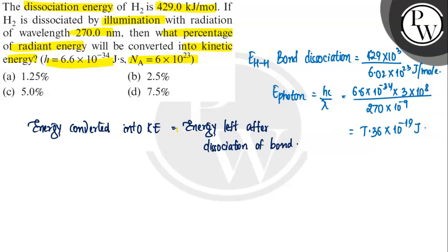Toh energy converted into kinetic energy will be, so this will be equal to 7.36 minus, minus kitni di gai hume? 7.12, right here. So this value will be 7.12 into 10 power minus 19 joule per mole. Toh ahi hoogi 7.36 minus 7.12 into 10 power minus 19. So this will be equal to 0.24 into 10 power minus 19 joules.